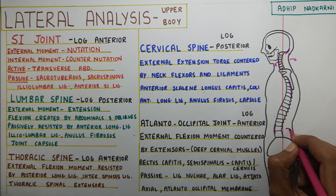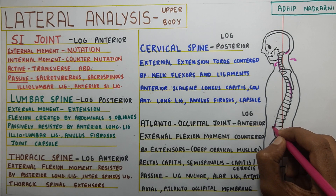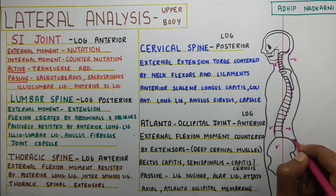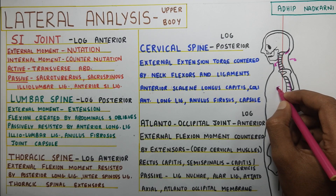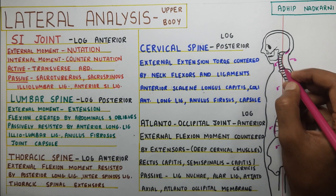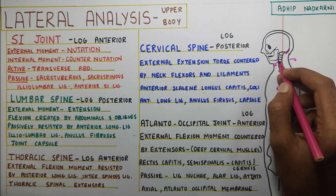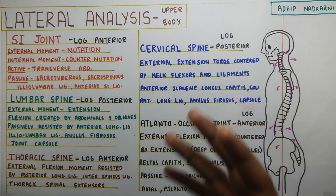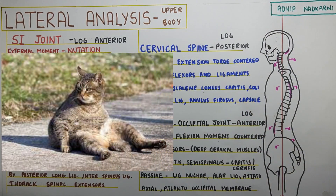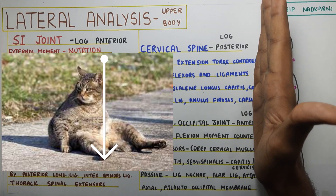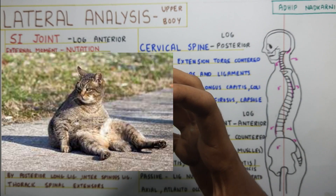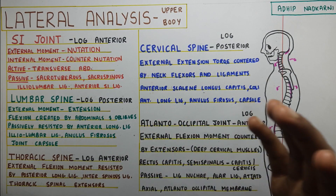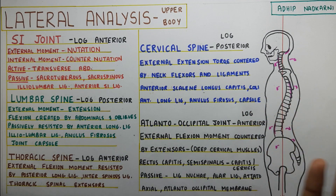To summarize the moments: at the lumbar spine, the external movement is extension countered by flexion. At the SI joint, it is nutation countered by counter-nutation. At the thoracic, it is flexion countered by extension. And at the cervical, it is extension countered by flexion. With that, we finish the lateral analysis of our body. Now if you see a person with bad posture, you'll be able to realize the line of gravity is shifted anteriorly, the anterior muscles are activating too much, and the posterior muscles are not activating enough — so you strengthen those muscles to make postural correction.